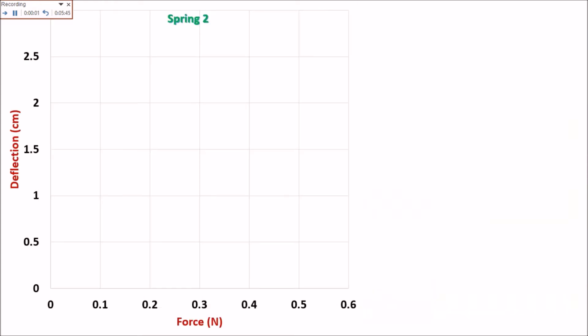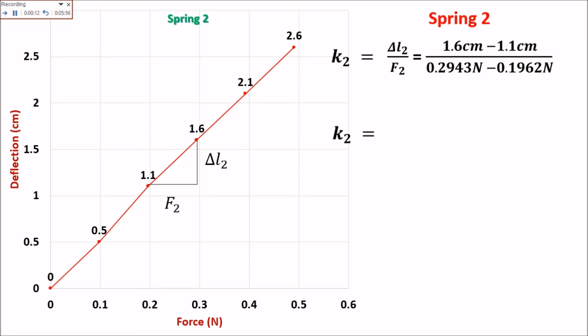To compute for the spring constant of Spring No. 2, we will get the slope. So that is change in length 2, divided by force 2.